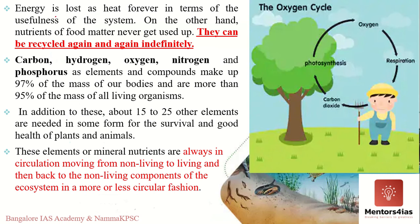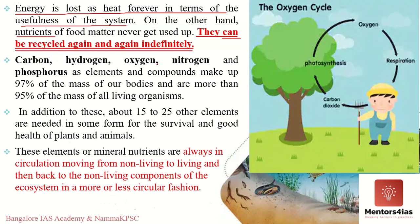Energy flow in the ecosystem is always unidirectional and non-cyclical, meaning as energy flows through the food chain, some amount is always lost as heat. This lost energy does not re-enter the food chain; instead, energy is always derived from the sun and is not recycled. But this is not the case with nutrients — nutrients can be recycled again and again. For example, through respiration we breathe in oxygen and release CO₂, while plants through photosynthesis use CO₂ and release oxygen, and this cycle continues. The oxygen molecules you breathe could be the same ones used by Lord Buddha around 2,600 years back.